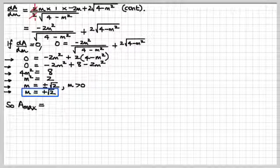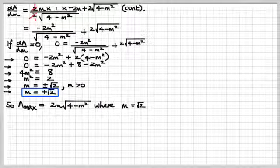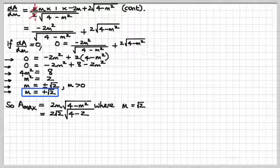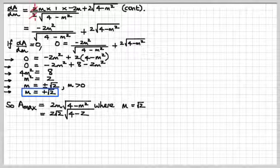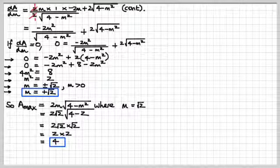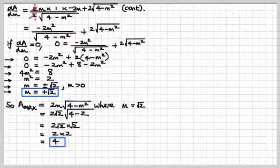Now we've got to find the maximum area at that value of m. That was our equation for the area, and we're going to substitute m is root 2 into that. We get 2 times root 2 times the square root of 4 minus 2. 4 minus 2 is 2, so that just is root 2. So we've got 2 times root 2 times root 2, which is 2 times 2, which is 4. There's our maximum area, and that's it.